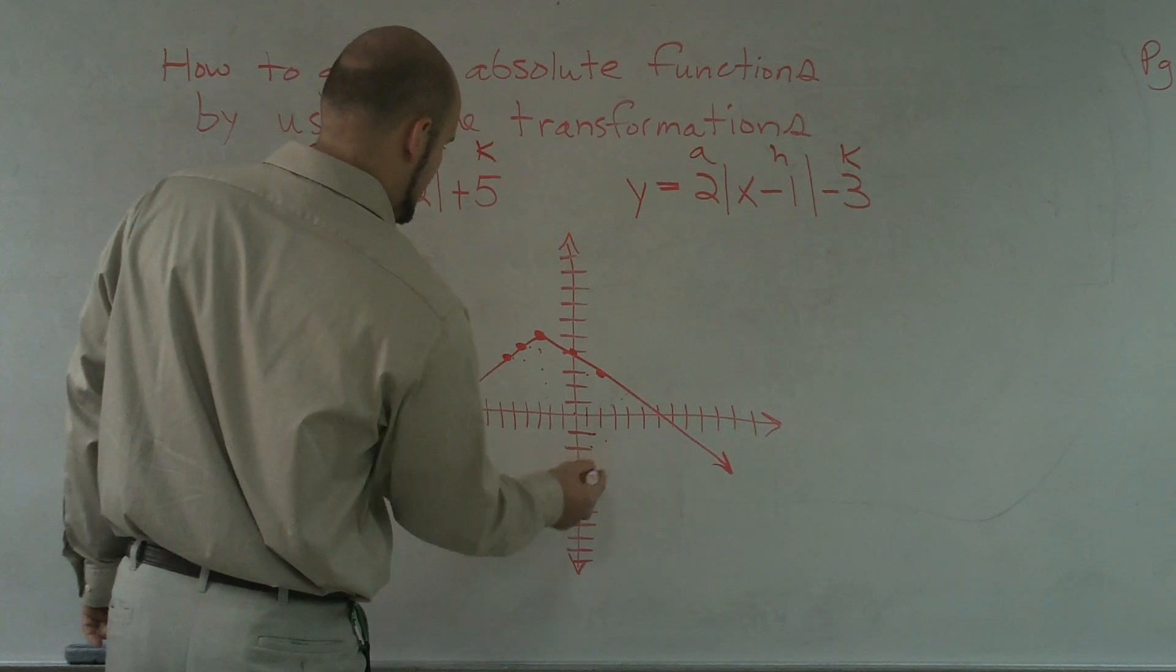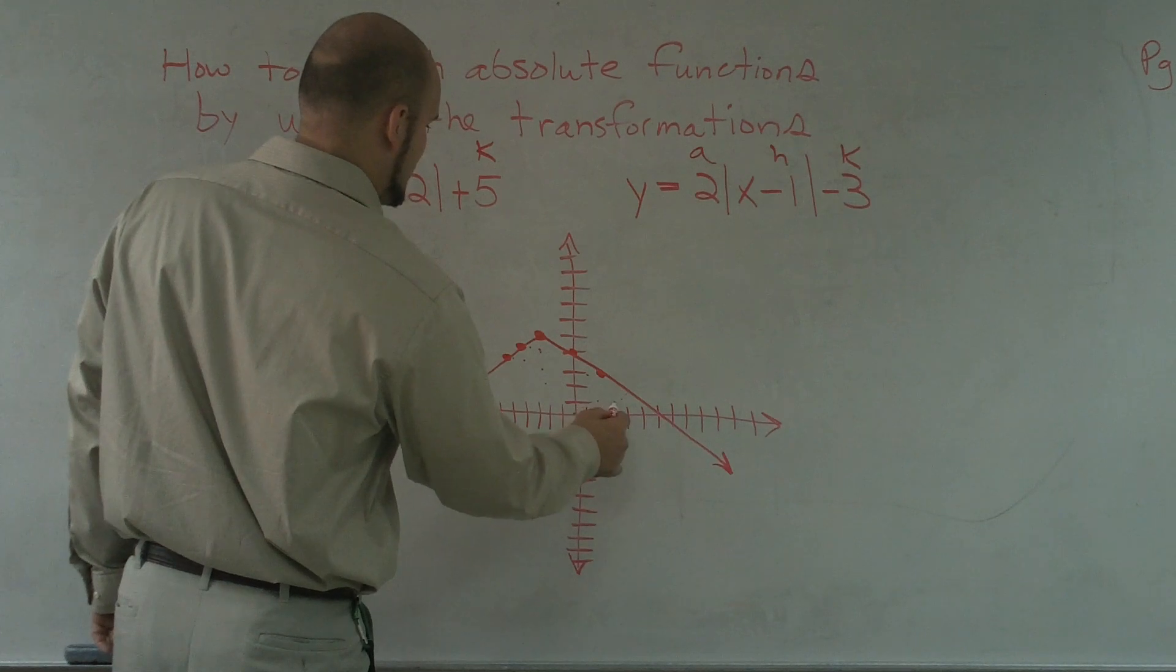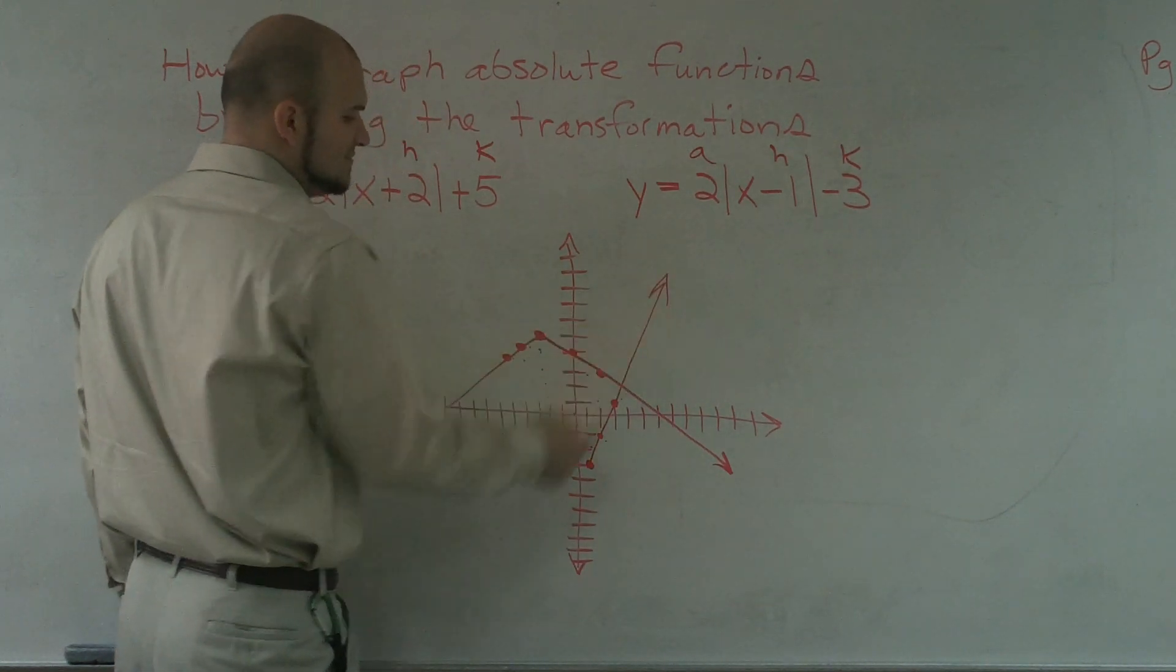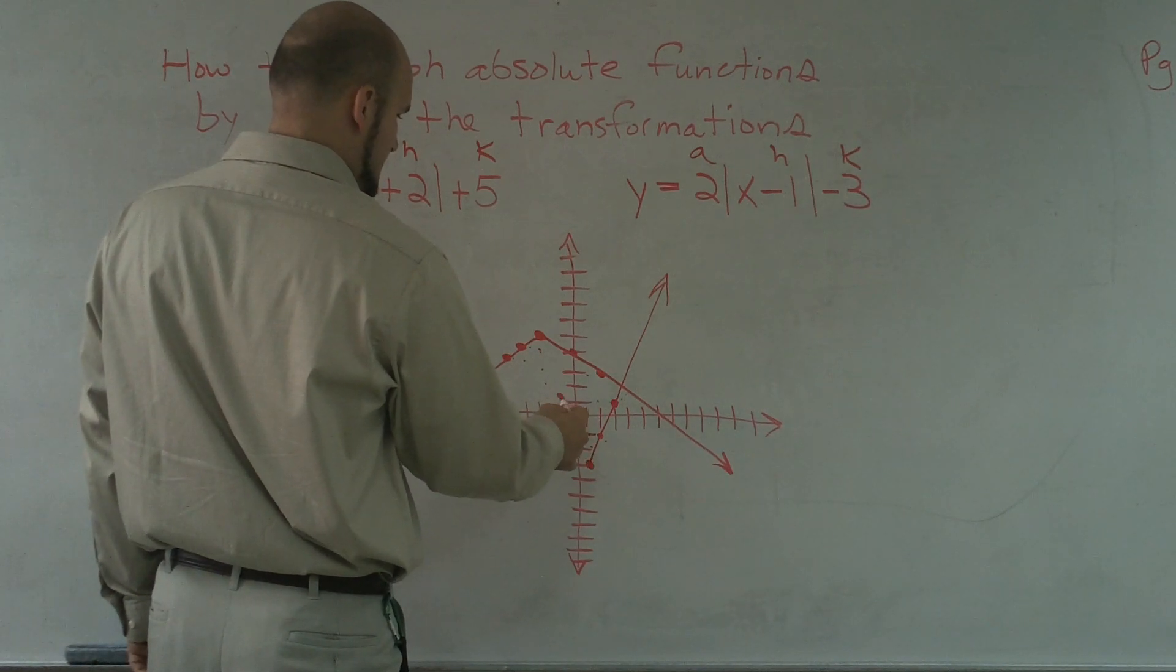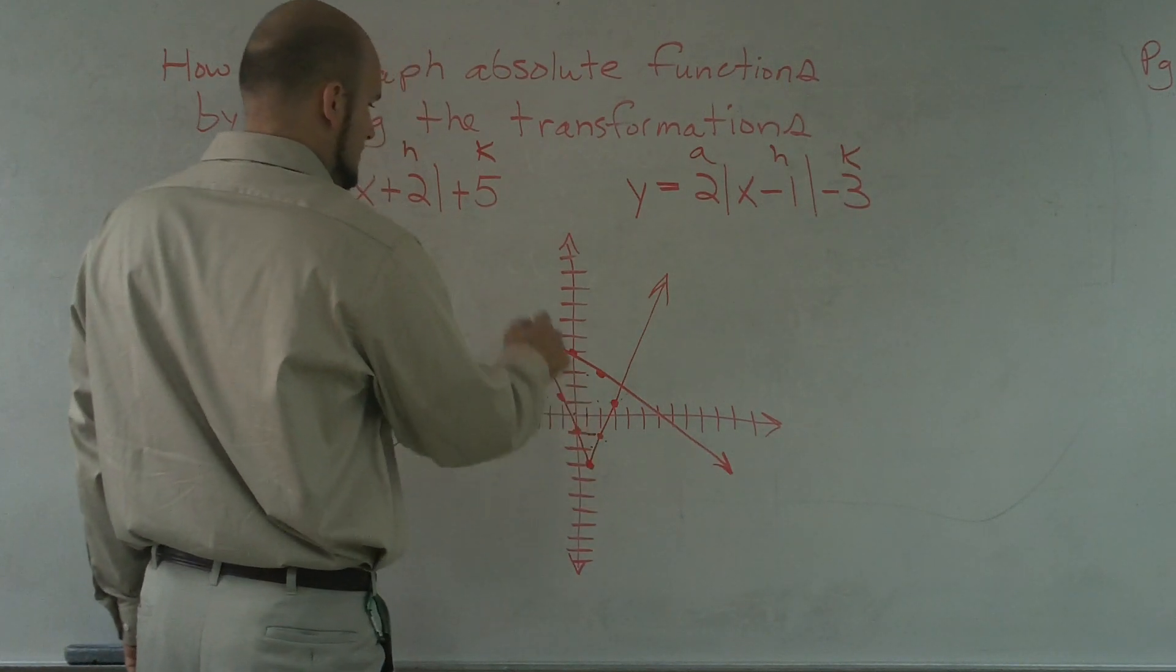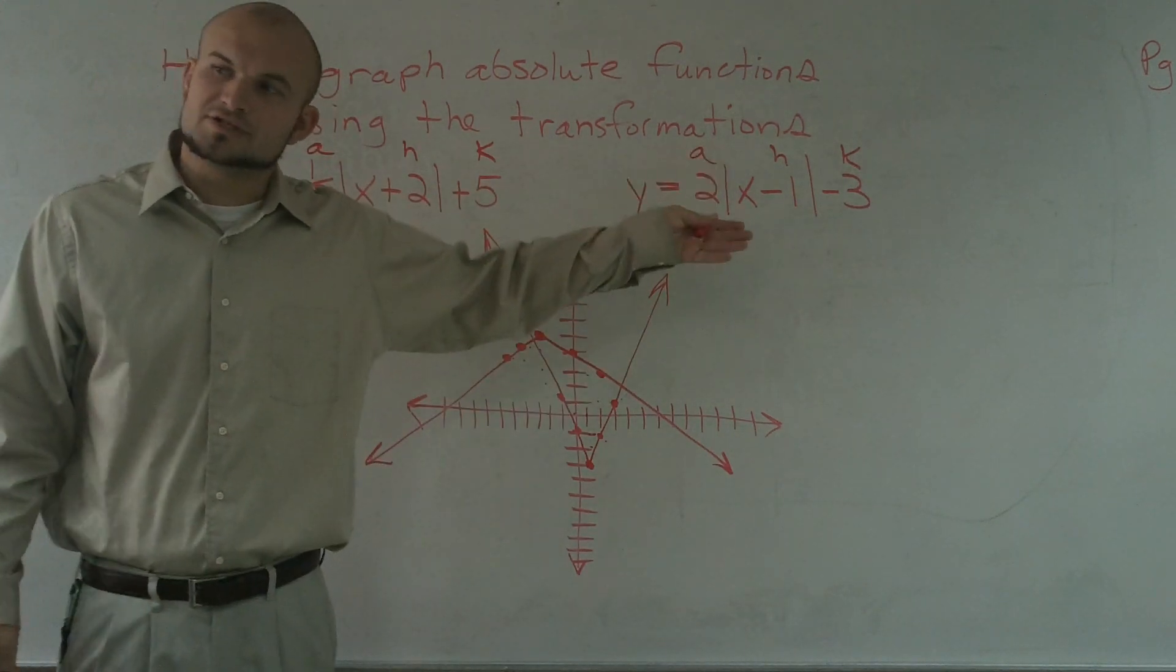That's the left one, right? So, up 2 over 1. Up 2 over 1. And an absolute value, you guys remember, mirrors on the other side. So, that is how you would graph this one, just by the transformations.